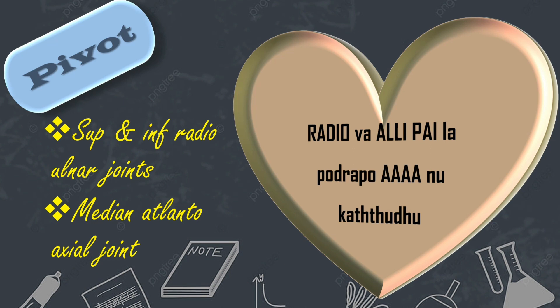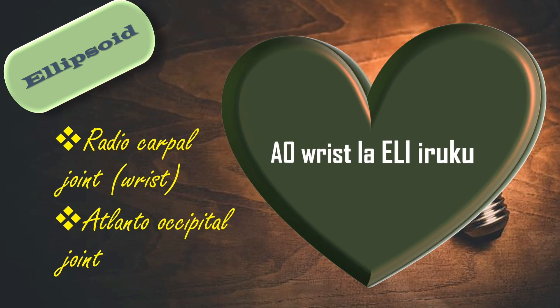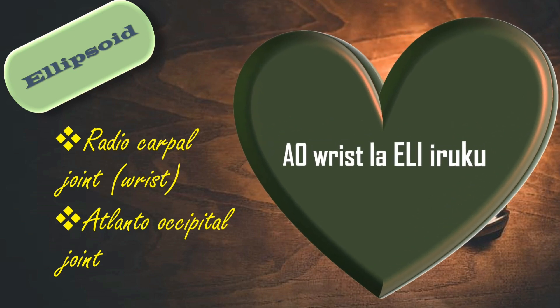Next is ellipsoid joint. Administrative officer — that is A.O. — wrist. A.O. is atlanto-occipital joint. Wrist is the radiocarpal joint. These are the ellipsoid joints.